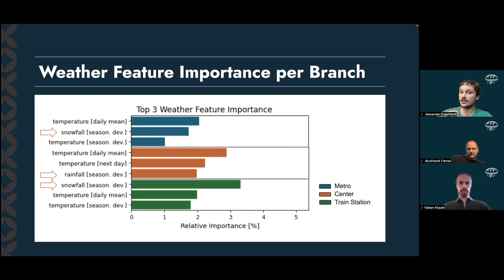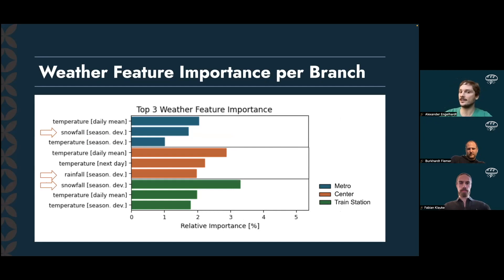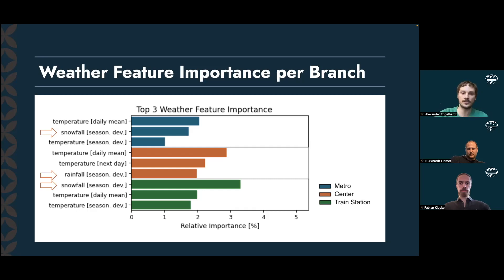For all branches, temperature always turned out to be pretty important. However, while snowfall was among the top three weather features for the metro and train station branches, we found rainfall to be among the top three weather features only for the city center branch. It's also worth highlighting that all these importances reflect feature contributions on a global scale across the whole year. It is likely that the relative importance of weather features strongly varies with yearly season — for example, snowfall may have a much more prominent effect during winter since it almost exclusively occurs then.